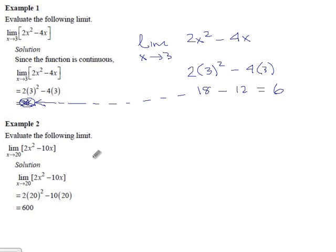For the second example, again, they give us limit as x goes to 20 of 2x² - 10x. Again, there's no reason to think that this is going to misbehave when x is 20, so just sub it in.